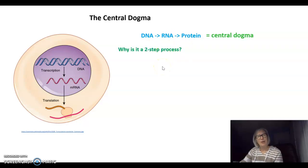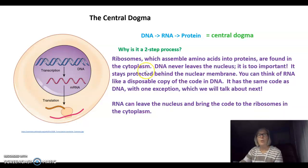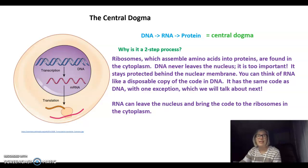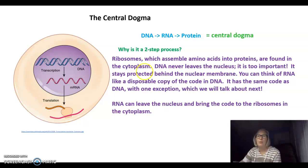Why is this a two-step process? Why can't DNA code directly for proteins? Well, the ribosomes, which assemble the amino acids into proteins, are found in the cytoplasm, but DNA never leaves the nucleus — it's too important. It stays protected behind the nuclear membrane. You can think of RNA like a disposable copy of the code in DNA. It has the same code as DNA, with one exception that we're going to talk about soon.